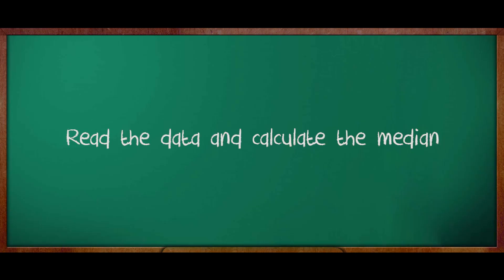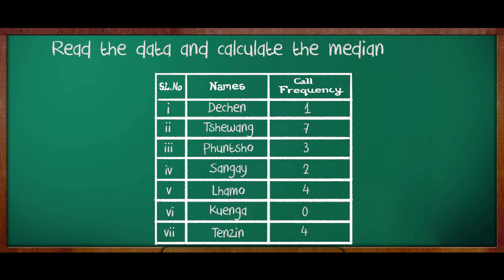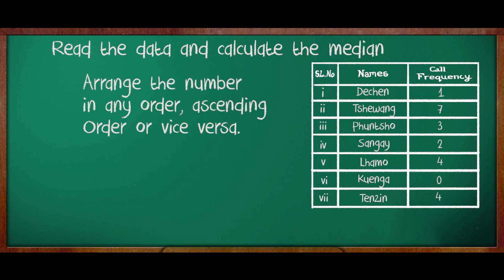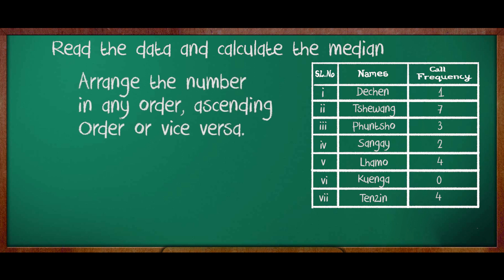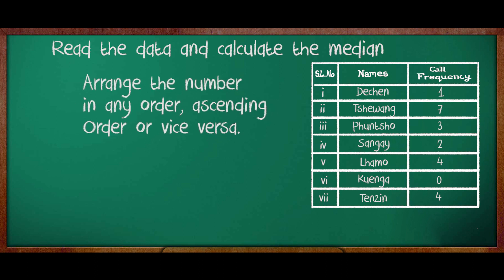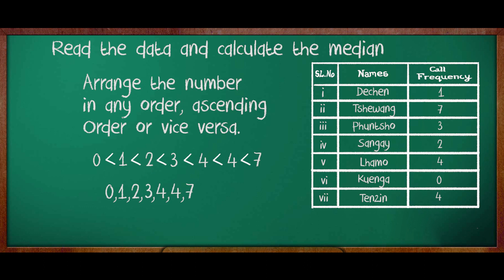Now, let us read the data and calculate the median. The first thing that you have to do is arrange the data values in ascending order or descending order. For example, the data set values are 1, 7, 3, 2, 4, 0, 4. Let us arrange in ascending order. The number starts from 0, since 0 is the smallest of all. So: 0, 1, 2, 3, 4, 4, and 7. From this set of numbers, we can see 3 in the middle. So, 3 is called the median of this data set.